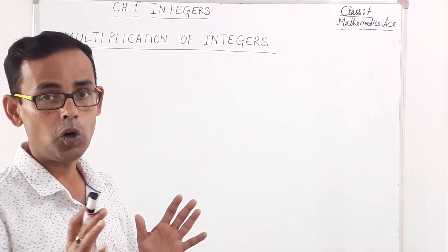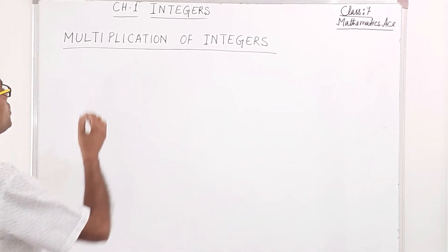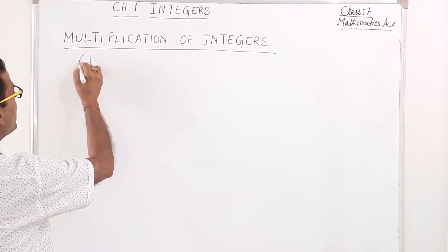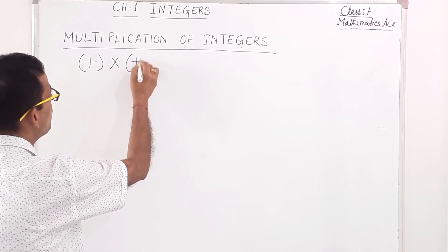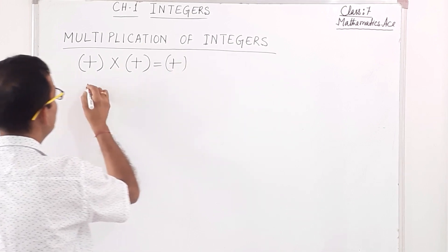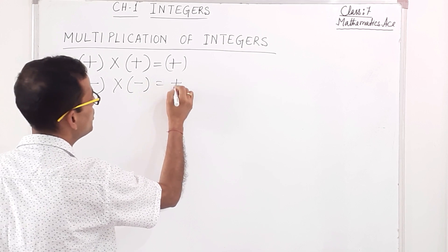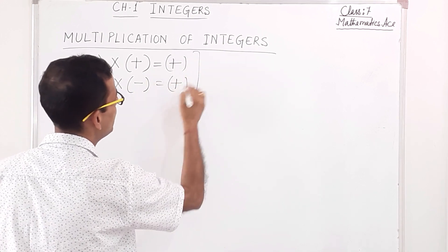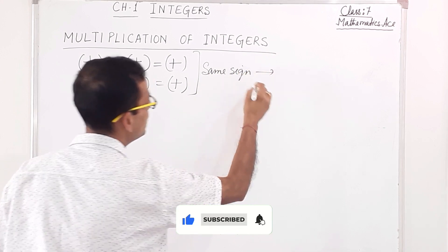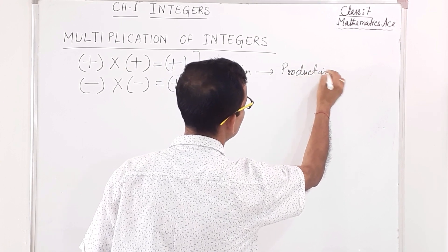In this part, we are going to study multiplication of integers. For multiplication of integers, we must know certain rules. The first rule: positive integer into positive integer gives positive, and negative integer into negative integer also gives positive. That means, same sign when you multiply, the product is positive.